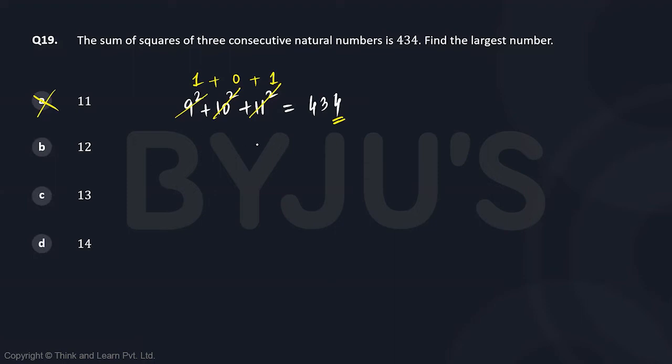Suppose 12 is the largest number, so 12 squared plus 11 squared plus 10 squared should end in 4. Let's see, 10 squared will end in 0, 11 squared will end in 1, 12 squared will end in 4. 0 plus 1 plus 4 is not going to end in 4, so b is also ruled out.